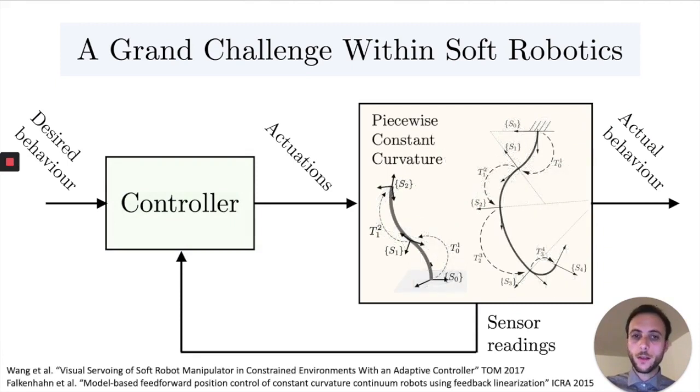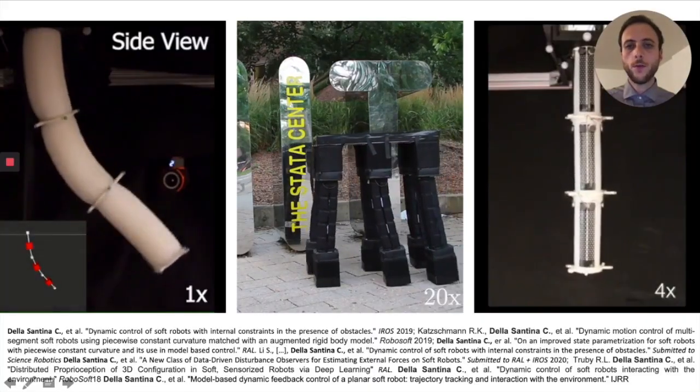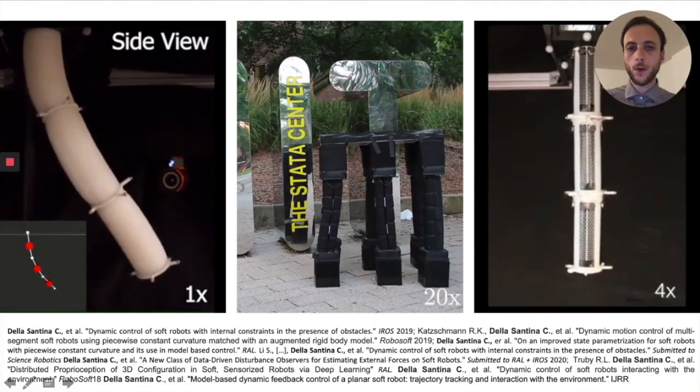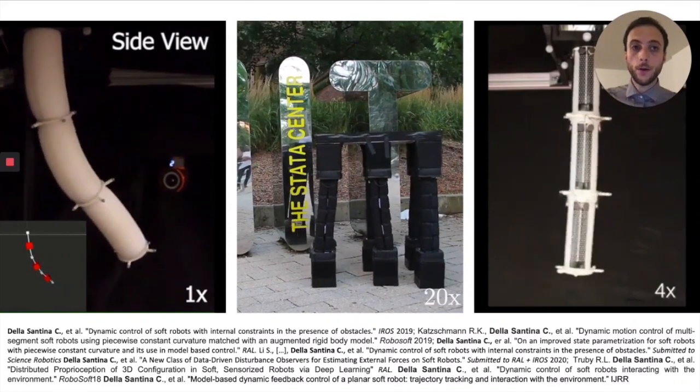A very common and successful strategy to achieve this goal is to describe our continuous system as a sequence of segments with constant curvature, obtain in this way a kinematic or dynamic model which is much simpler and low-dimensional, and then use this low-dimensional model to derive a model-based controller. These are just a few examples of soft robots controlled using this technique to convince you about the feasibility.